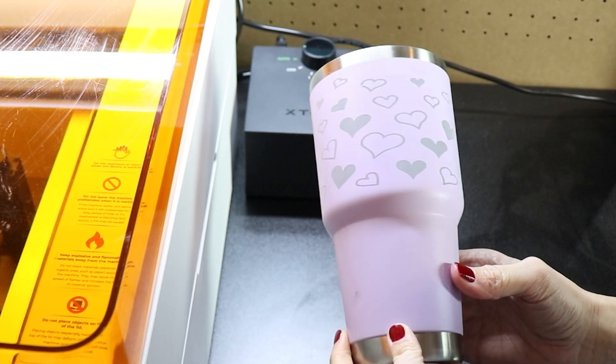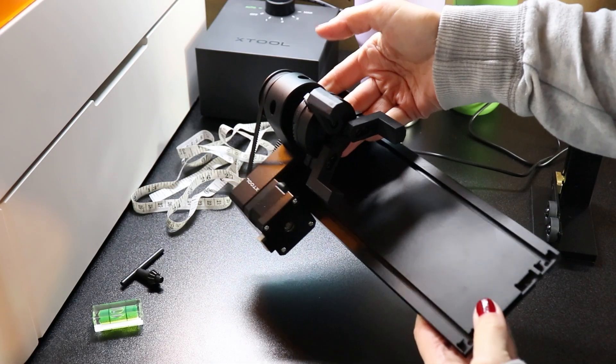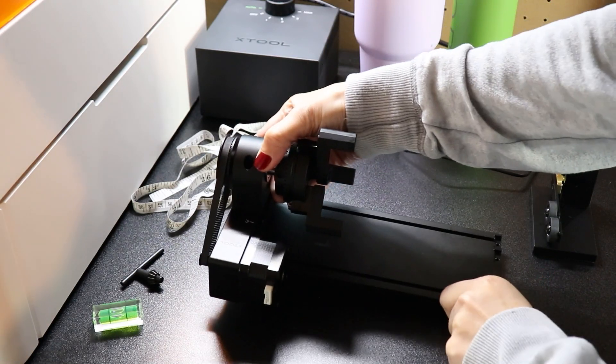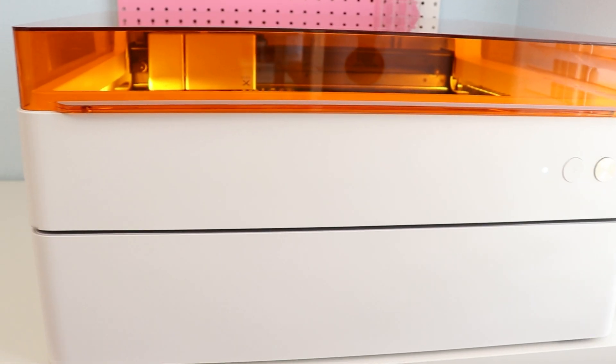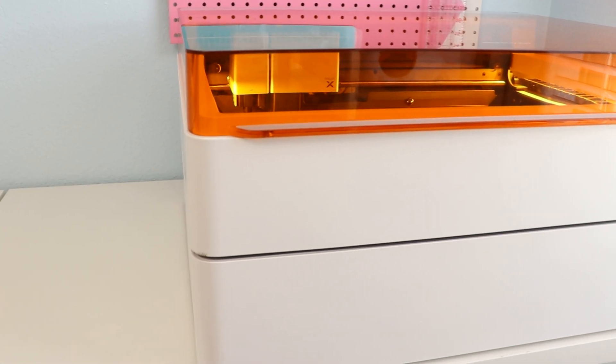Today we are going to make a tumbler using the rotary attachment for the X-Tool M1 Ultra. We are going to walk through a beginner project from start to finish so you can really get a good idea of how to use this setup.